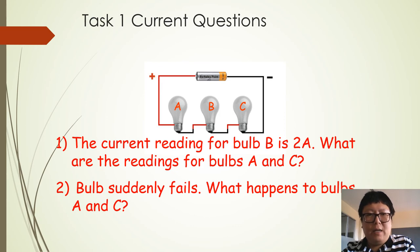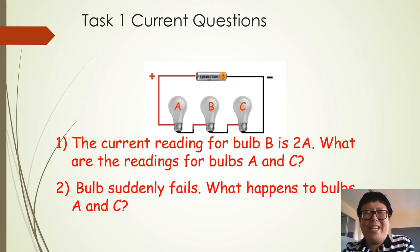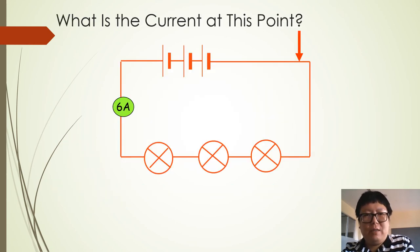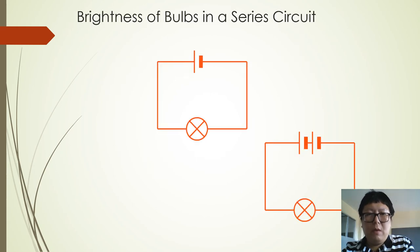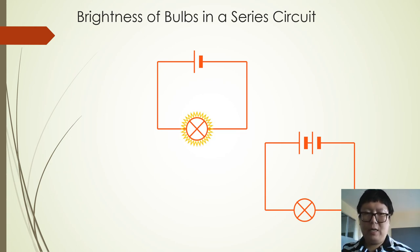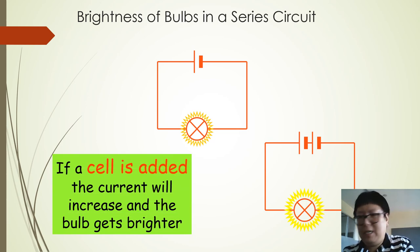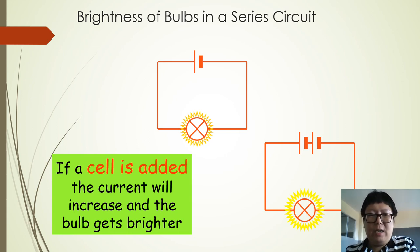Here is a question you can practice at home — put your answer in the second page in OneNote homework. Stop the video if you need to see the questions. What is the current at this point? Also, what is the brightness of bulbs in a series circuit? There are two different circuits here — the only difference is the electric source: one uses one cell, the other uses two cells. If you increase the number of cells, the current increases, and the bulb gets brighter.